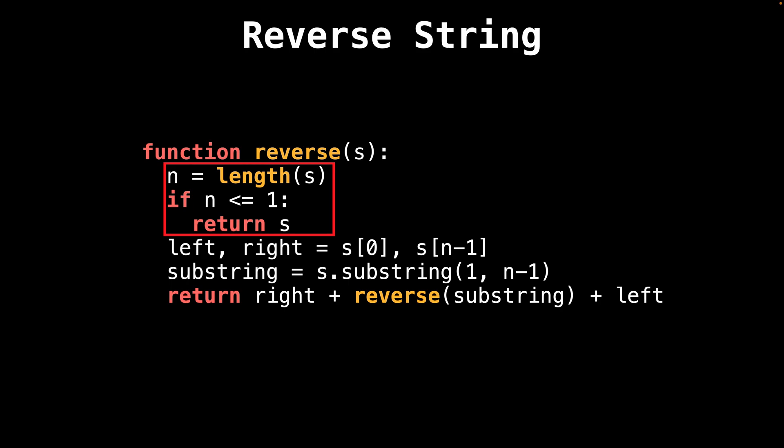This base case handles the scenarios where the remaining string has a length of zero or one. If the remaining string is empty, which occurs in even length strings, we return an empty string.